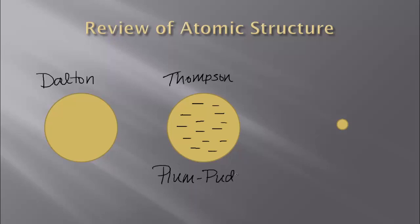This is often referred to as our plum pudding model. If you've ever eaten plum pudding, I guess this makes more sense. Then we went on to Rutherford. And Rutherford said, well it's not this giant sphere of negative charge. There's actually a small sphere that has positive charge, and of course the neutrons inside. But then surrounding the outside is all of this negative charge that Thomson found.